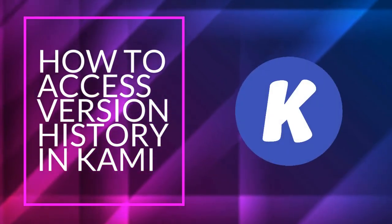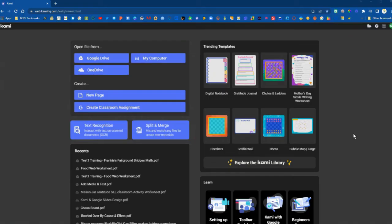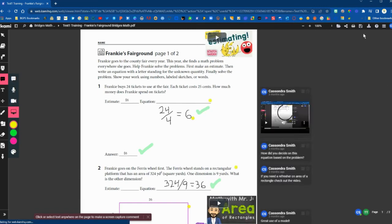In this video we are going to show how to access version history in CAMI assignments. First we're going to show how to access that directly in CAMI and we're going to open up an example student assignment from our recents.